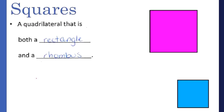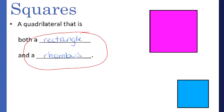Moving on to squares: a square is a type of quadrilateral that shares all the properties of both a rectangle and a rhombus. All those properties from rectangles and rhombi are merged together. So as soon as you have those two sets of properties combined, you've formed a square — a square is a type of rectangle, rhombus, parallelogram, and quadrilateral.